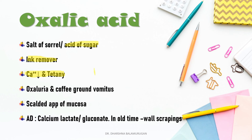Death usually occurs within 12 hours; the fatal dose is 15 to 20 grams. Note: inorganic poisons are given in ml, whereas oxalic acid is 15 to 20 grams. The fatal period is 1 to 2 hours. Mainly, it causes a scalded appearance of the mucosa of the stomach; coffee-ground vomitus, oxaluria, and prolonged diarrhea will also occur.